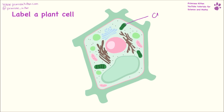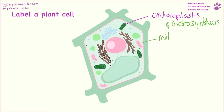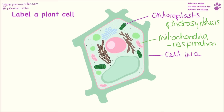Here we have the chloroplasts, which is where photosynthesis takes place. Here we have the mitochondria, which is where respiration takes place. On the outside we have the cell wall, which is responsible for the shape of the cell.